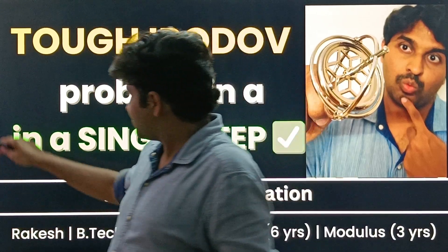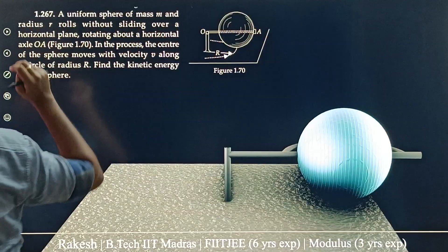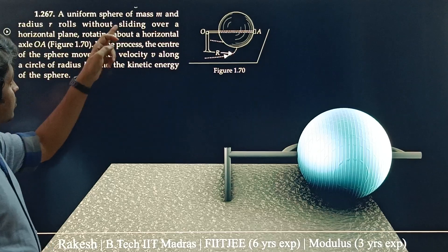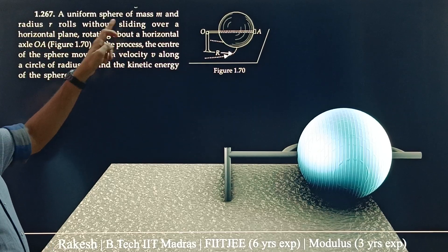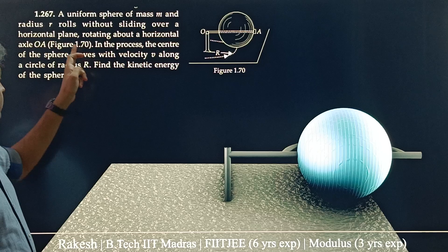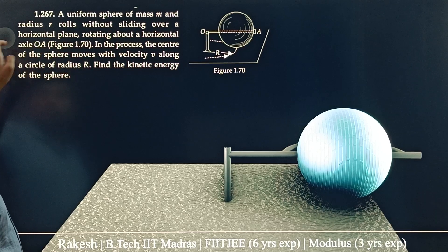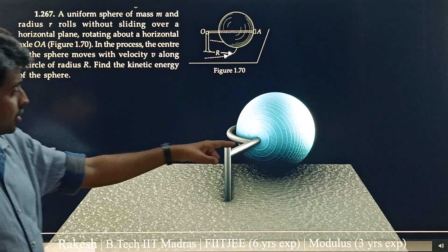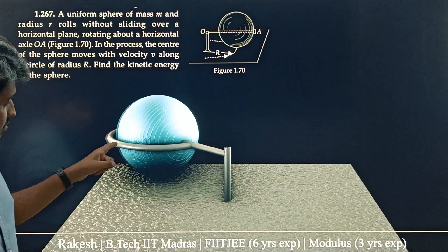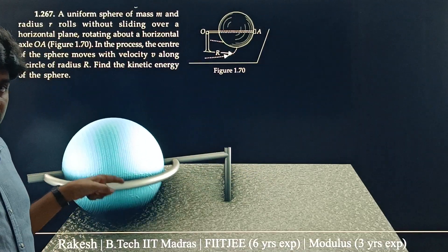Let us go to the question. A uniform sphere of mass m and radius r rolls without sliding over a horizontal plane. So let us have a look at this. There is a sphere which is of mass m and radius r rolling on a horizontal plane.